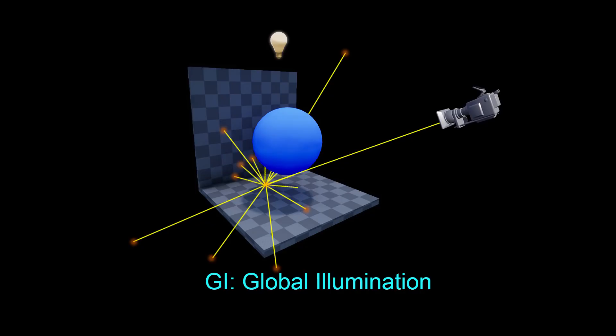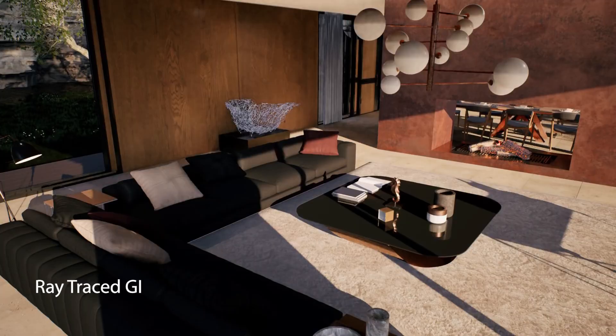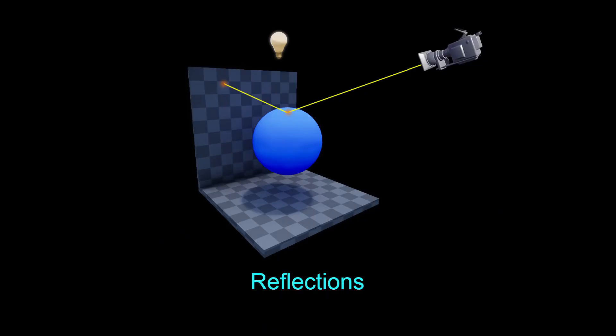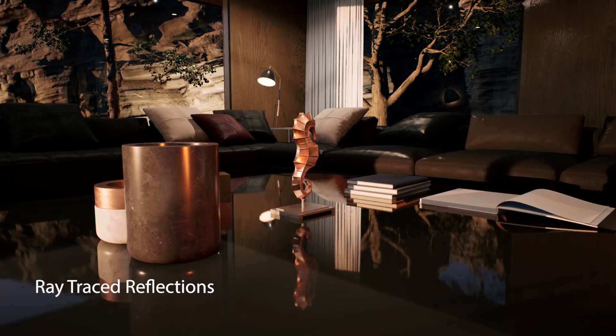Ray trace global illumination adds real-time, interactive bounce lighting to areas not directly lit by a given light source. Ray trace reflections produce accurate environment reflections, support multiple light bounces, and capture the entire scene dynamically.